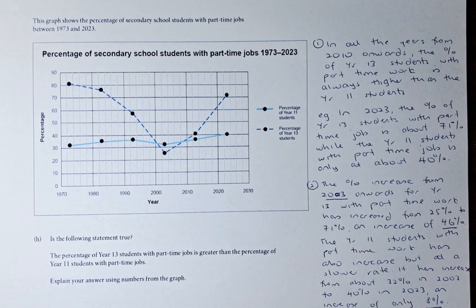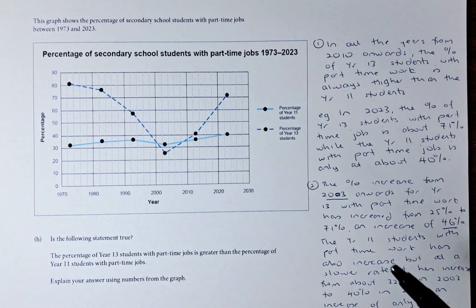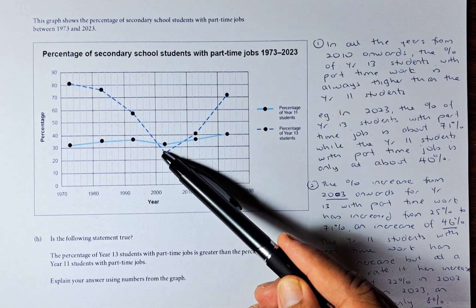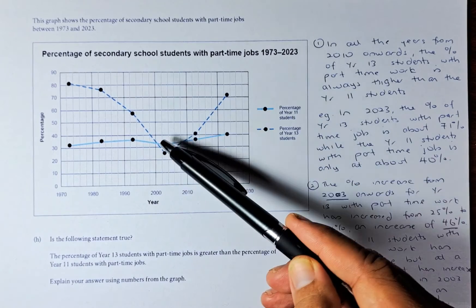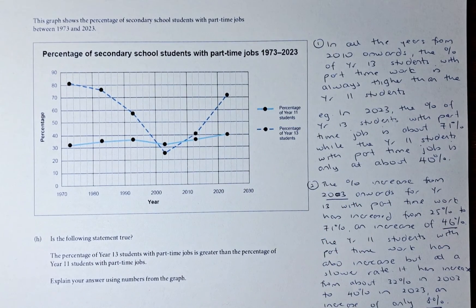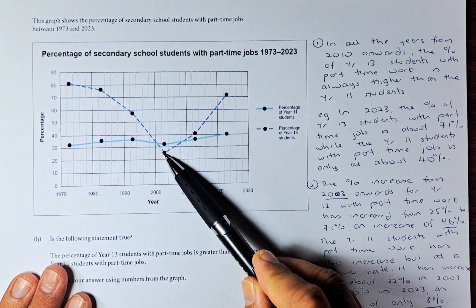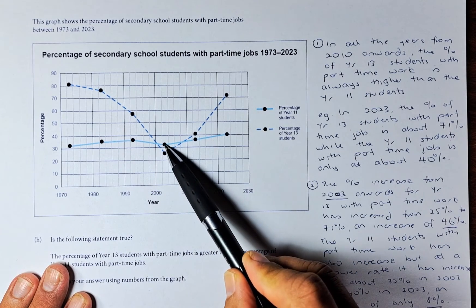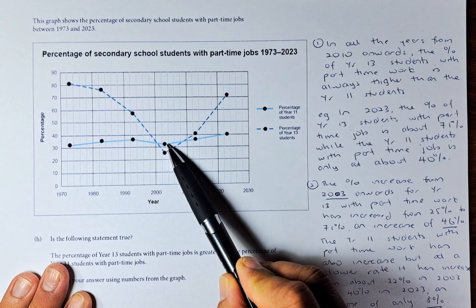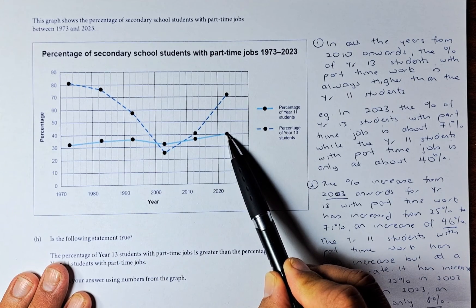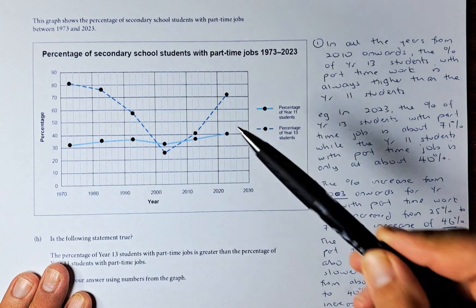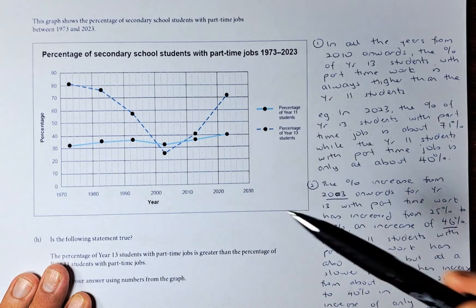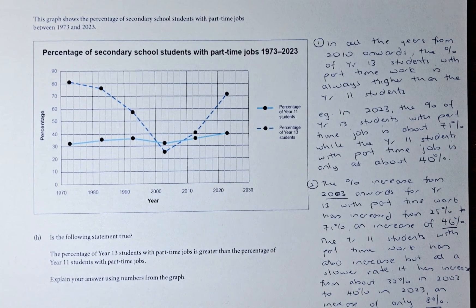The second point is that the percentage increase from 2003 onward is a lot steeper for Year 13 than for Year 11. For Year 13, it starts at 25% in 2003 and ends at 71% — an increase of 46 percentage points. For Year 11 it starts at around 32% and ends at around 40%, an increase of only 8 percentage points. So Year 13 has increased by 46 while Year 11 has only increased by 8.